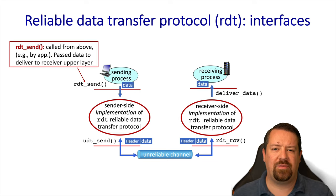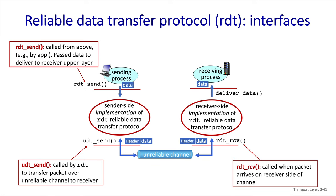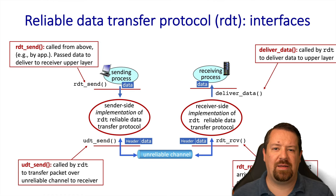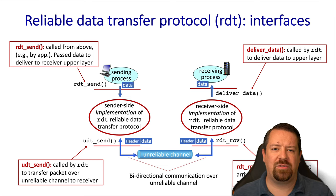The RDT send function is where the application will pass data to be delivered to the other end of the connection, and the UDT send function is the API exposed by the underlying unreliable network. When the underlying network has a packet to be passed to the transport layer on the receiver side, it will call the RDT receive function, and when the transport layer is ready to communicate data to the application layer, it will call the deliver data function. Our unreliable channel supports bidirectional communication, so the messaging can flow in both directions.